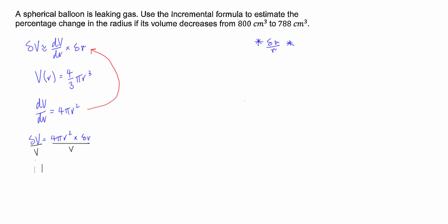And then what we're left with guys is we get dv over v is equal to four pi r squared times delta r all divided by, now this v here, rather than writing v I'm going to put in what the volume is equal to. Well the volume is equal to four over three pi r cubed.